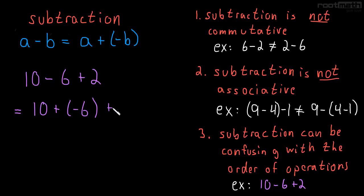Now, if we do the negative 6 plus the 2 first, we would get negative 4 from that. So 10 plus negative 4, which is equal to 6. So even though we did the negative 6 plus the 2 first, we got the right answer.